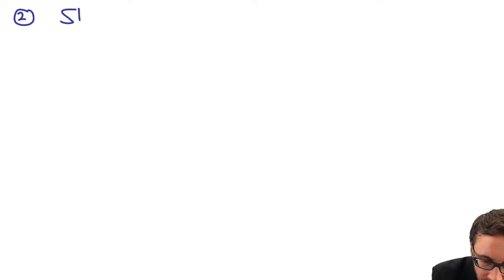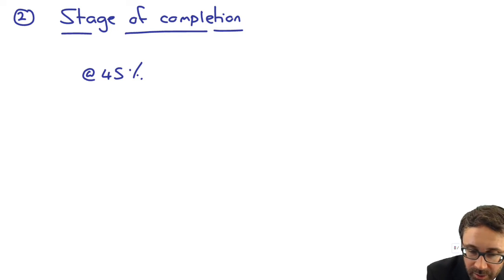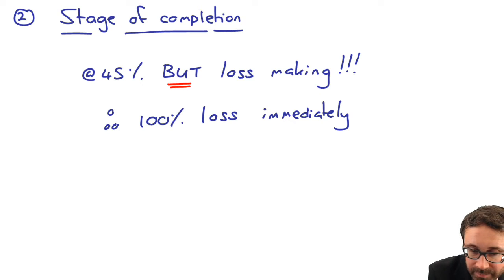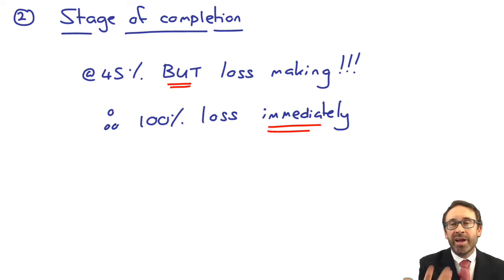Well, we've still got to think about the stage of completion, which we know is at 45% per the question, but it is loss-making. Therefore, we recognize 100% of the loss immediately in this year. And then we will work out the figure for the revenue based upon the stage of completion, the amount that the work has been certified, which in this instance was 45%.